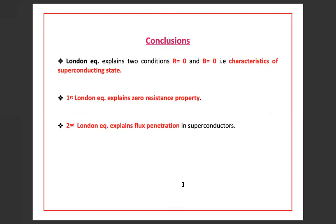In conclusion, London equations were able to explain two conditions: R equal to 0 and B equal to 0, which are characteristics of the superconducting state. The first London equation explains the zero resistance property, and the second London equation explains flux penetration in superconductors.